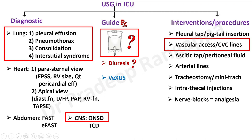Ascitic tap, peritoneal fluid, and arterial lines can sometimes be done without ultrasound, but for difficult arterial lines we tend to use it. Even tracheostomy can be done under ultrasound, as well as intrathecal injections where we give antibiotics intrathecally. Nerve blocks are predominantly the domain of anesthesiologists — especially in trauma patients or pancreatitis with severe pain, where we put thoracic epidurals to relieve pain and optimize breathing. For this recording, I'll focus mainly on lung ultrasound and the Blue Protocol.